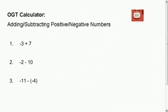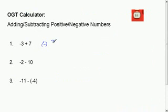The first button we are going to learn about is the negative button. This button is going to help you add and subtract negative numbers. If you look on your calculator, it is the white key down in the lower right-hand corner of your data entry keys. You are going to hit that button any time before you have a negative. So if we are going to type in negative 3, you hit that negative button and then type your 3, then plus 7.